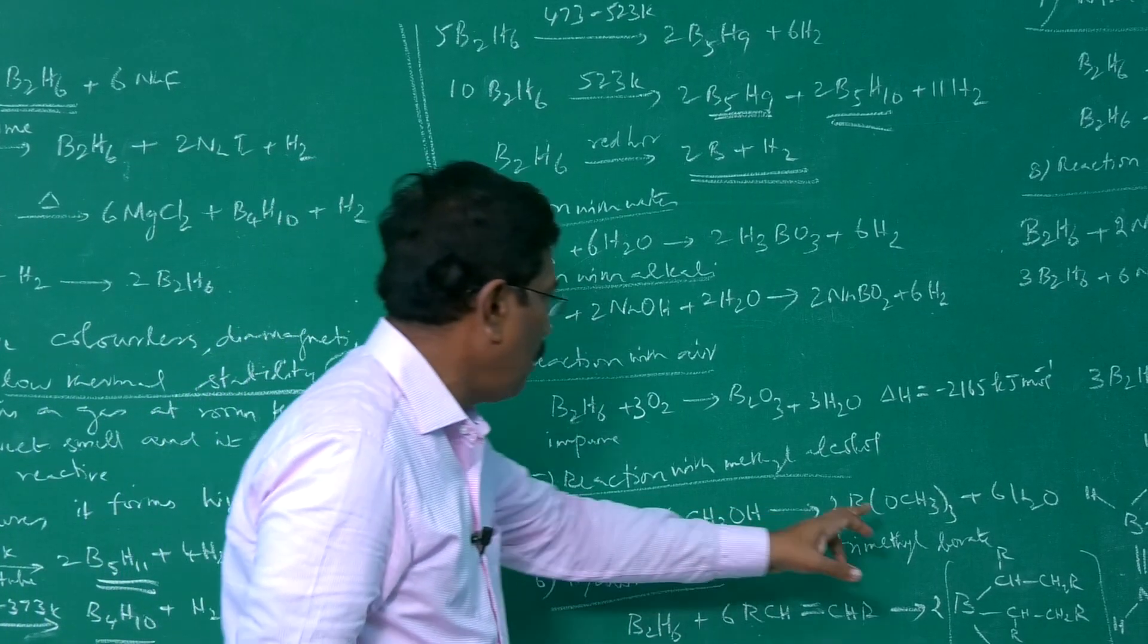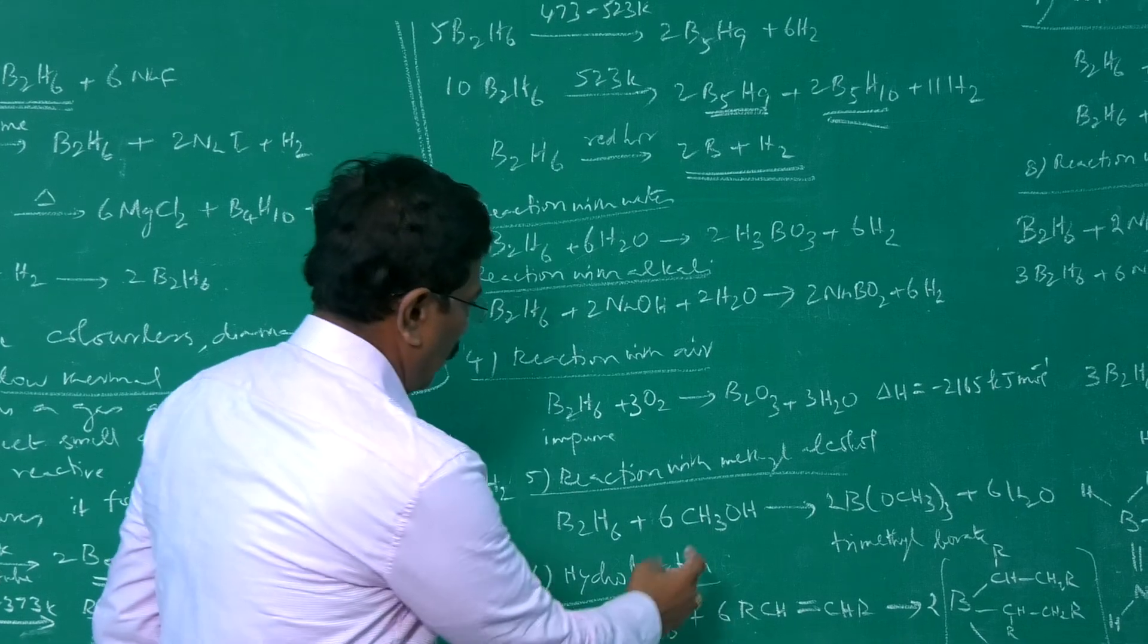The reaction with methyl alcohol. With methyl alcohol it forms trimethyl borate. The methoxy part is added here. Six hydrogen along with six OH, 6H2O. So 2B, 2B, OCH3 twice, OCH3 thrice. Valency borane 3, therefore B(OCH3)3, trimethyl borate. Two molecules, 2B(OCH3)3. Six OH, six hydrogen, therefore 6H2.